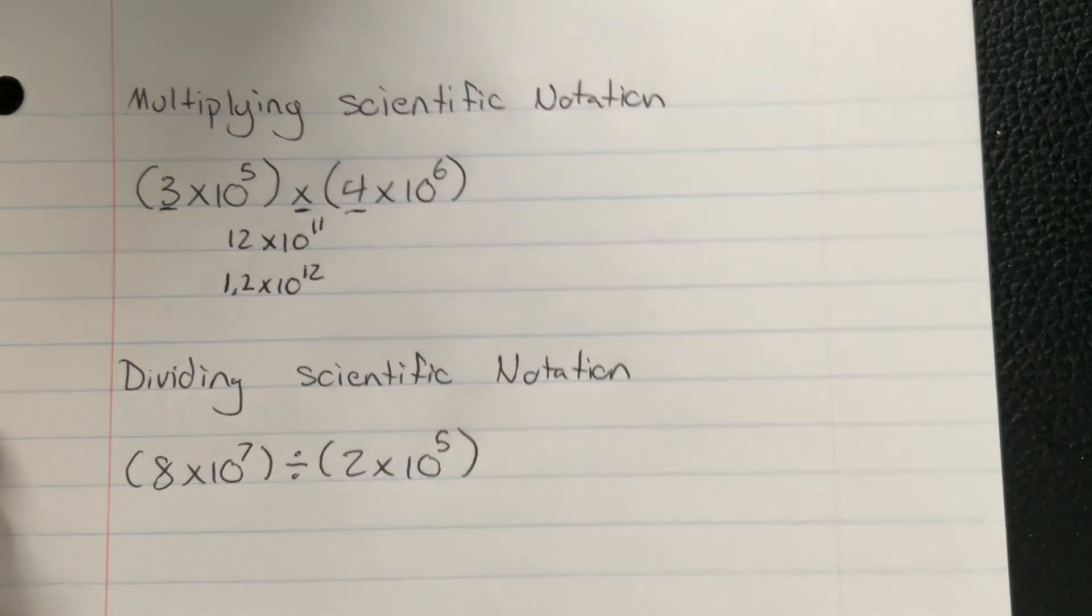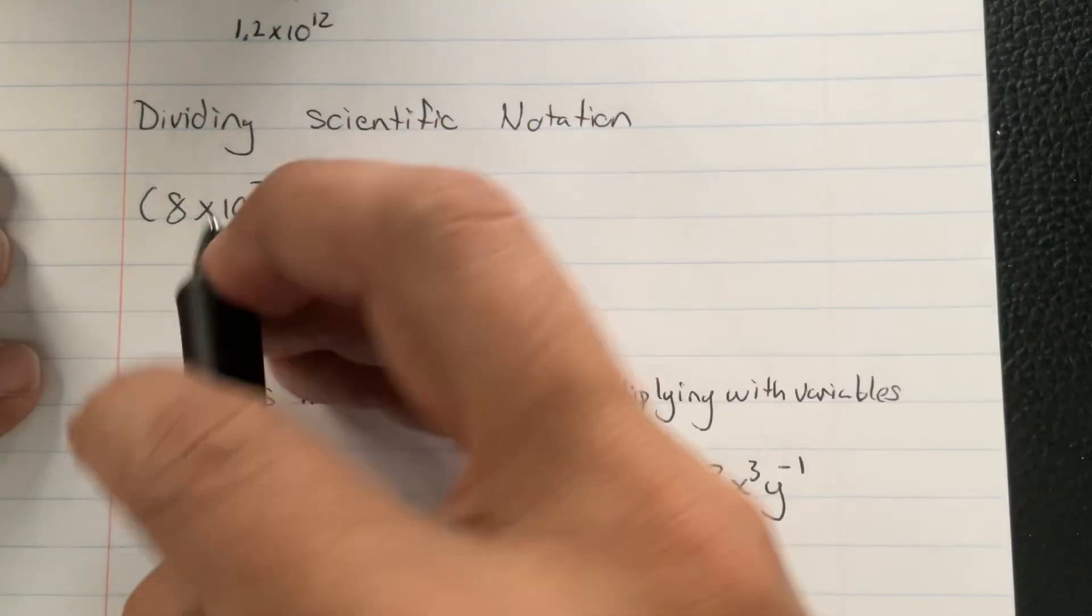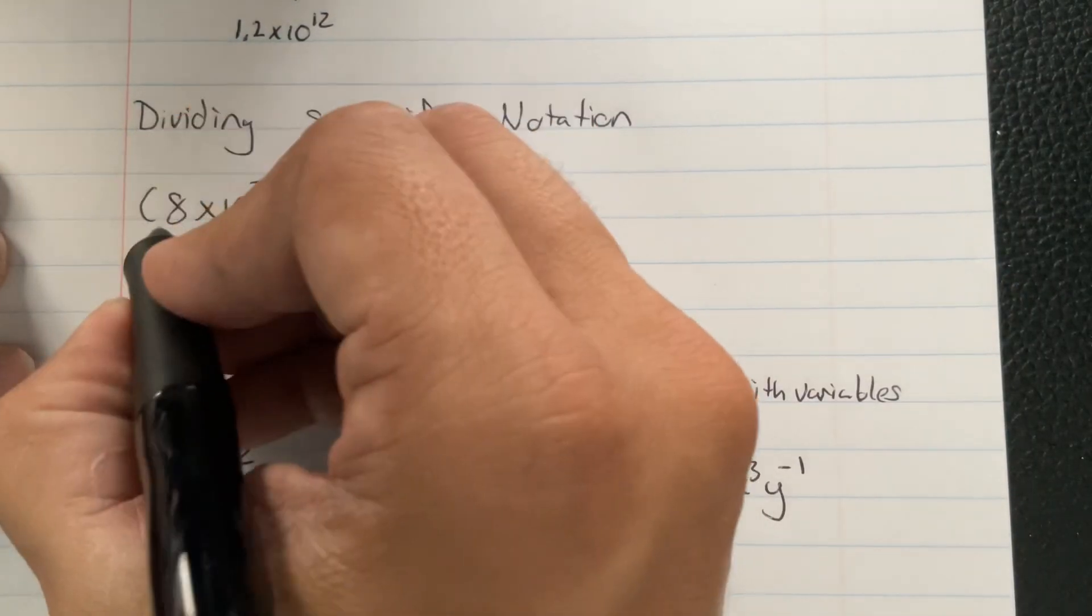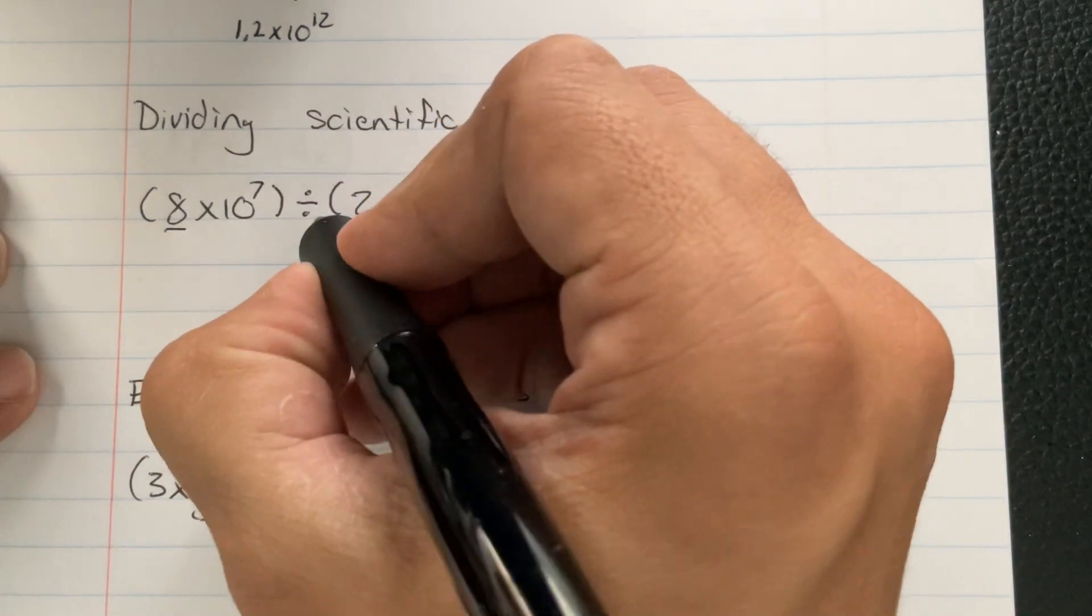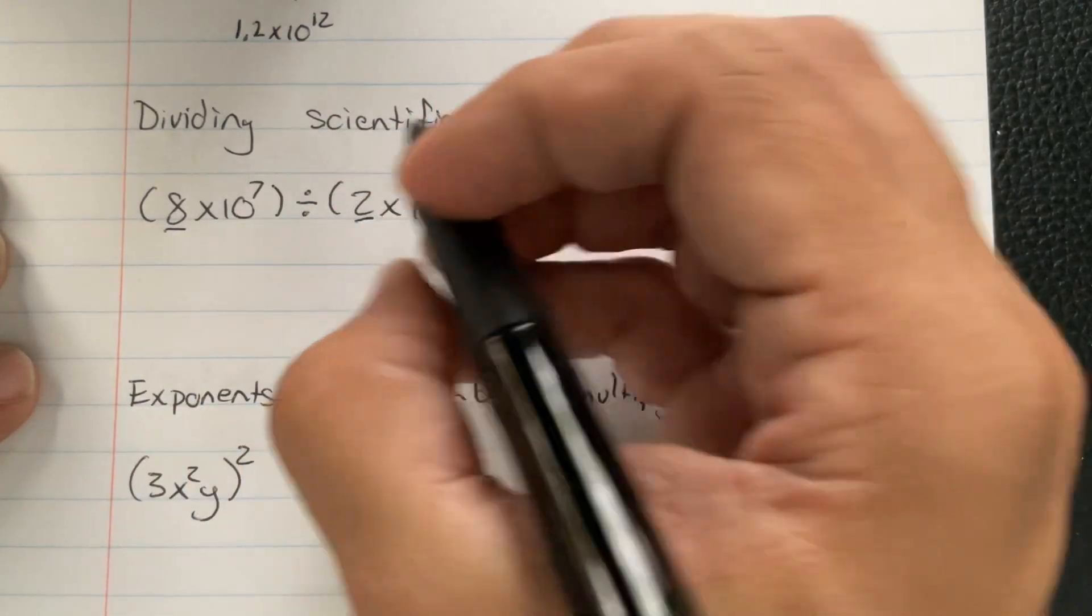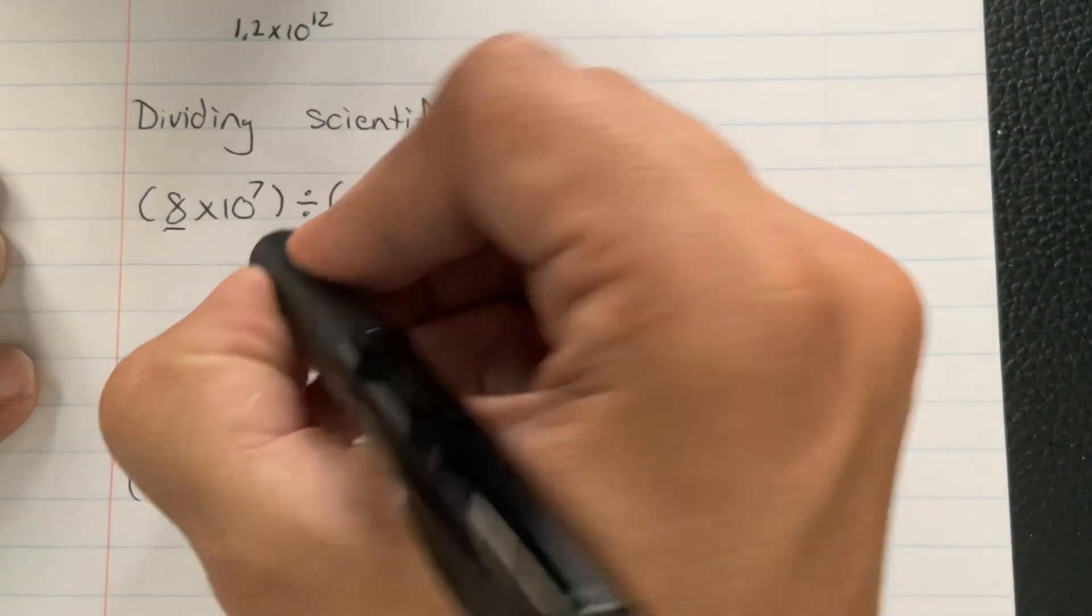All right, now we're going to shift to dividing scientific notation. So the front numbers, again, are going to do exactly what it says in the middle. 8 divided by 2, and that's going to be 4.